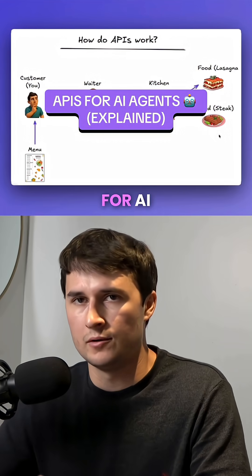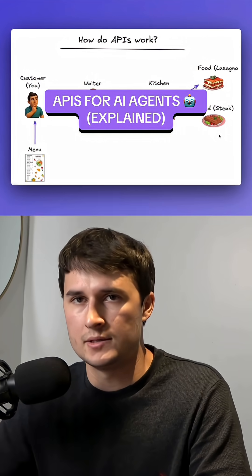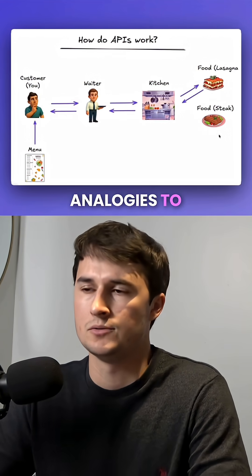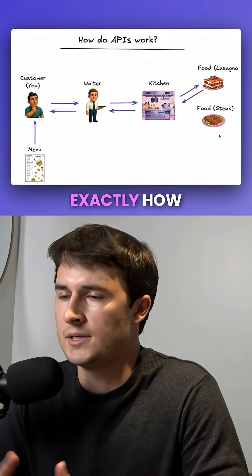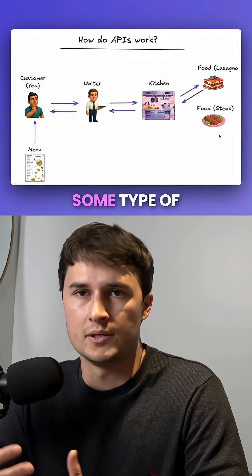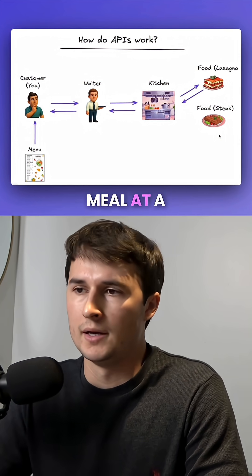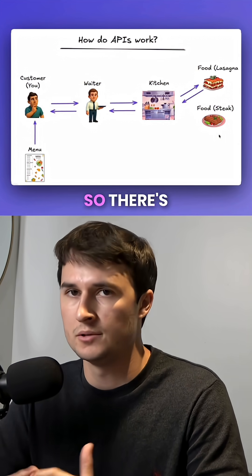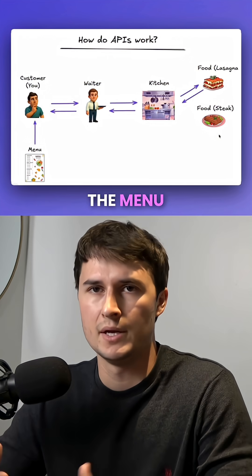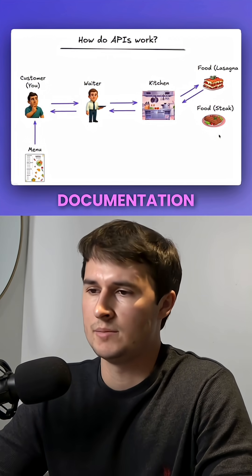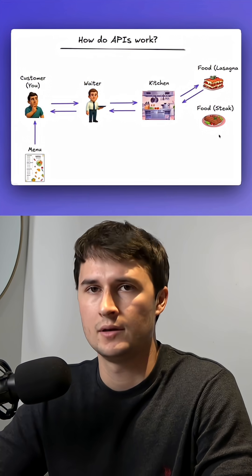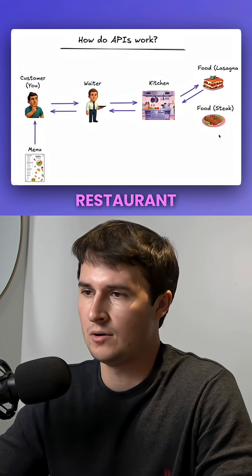So how do APIs work for AI agents? This is one of the best analogies to explain exactly how they work — you can compare it to ordering a meal at a restaurant. There's the customer, which is you. You have the menu, which is the documentation that explains everything that the restaurant offers.